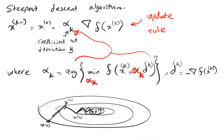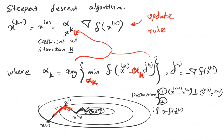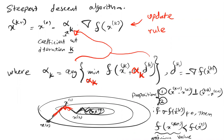There are two propositions for steepest descent. First: the vector x_{k+1} minus x_k is perpendicular to x_{k+2} minus x_{k+1}, meaning the steps are perpendicular to each other. Second: if the gradient of f at x_k is non-zero, then f of x_{k+1} is less than f of x_k, which means the function value is reducing at each iteration, moving towards the minimum.